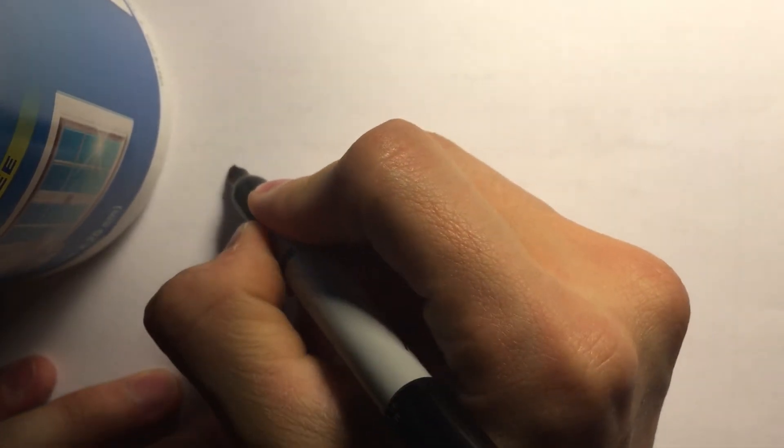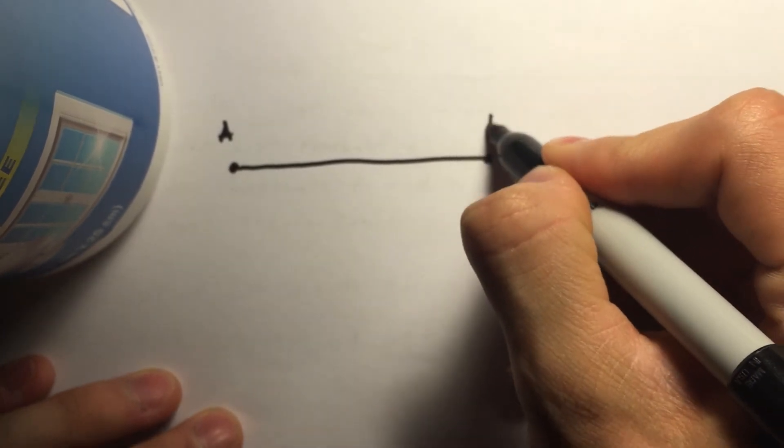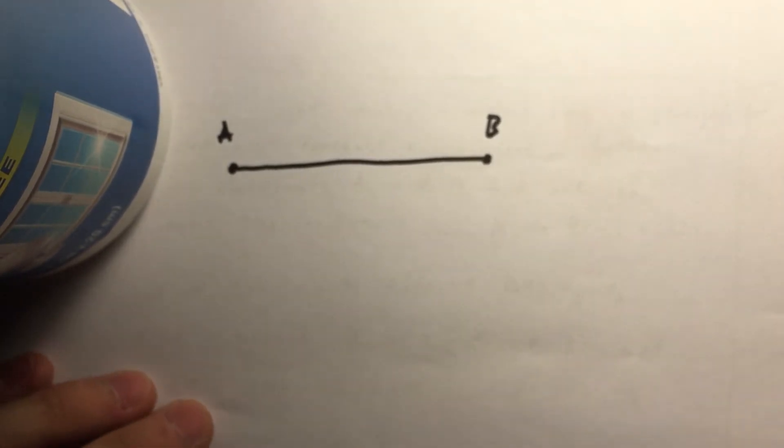We have our first point, we have our point A, and we have our second point, we have point B. And then it says we have constant acceleration. So we know our acceleration, which I'm going to write down on top.